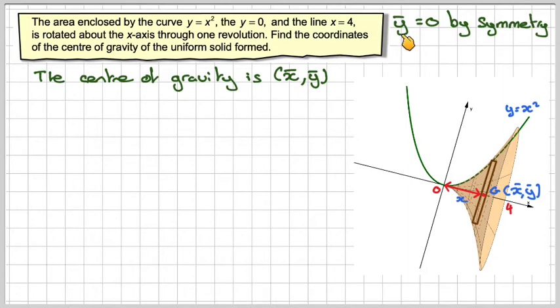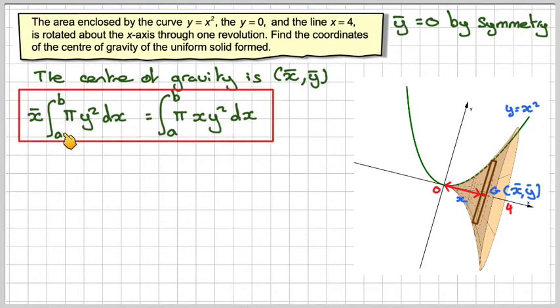So the formula for this: the y-coordinate of the center of gravity will be 0 by symmetry. And we have x̄ times the volume of revolution, which is the integral from a to b of π y² dx, equal to the sum of all the strips, the integral from a to b of π y² times x dx.